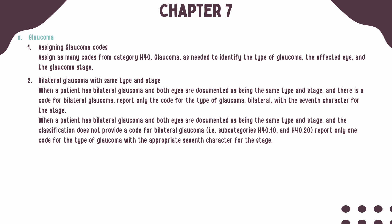If a bilateral code is not available, then you should only report one code for the type of glaucoma with the appropriate seventh character indicating the stage.